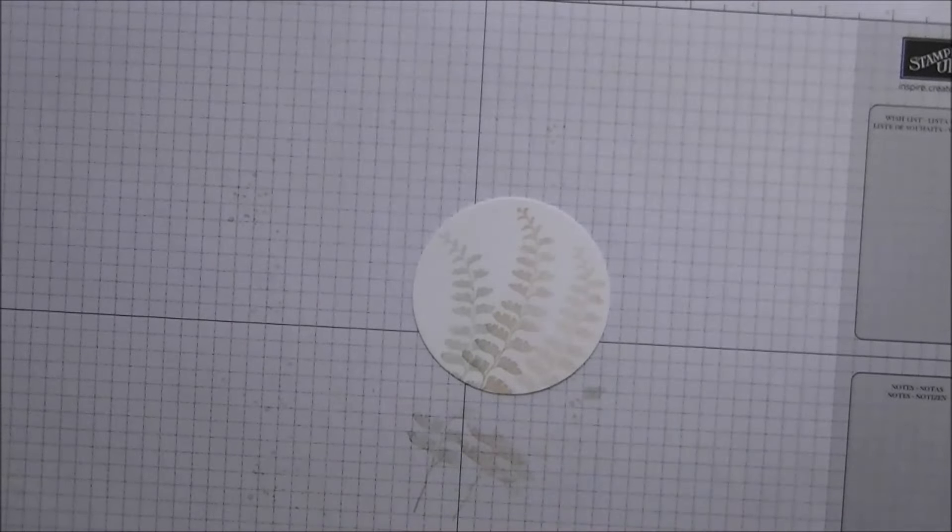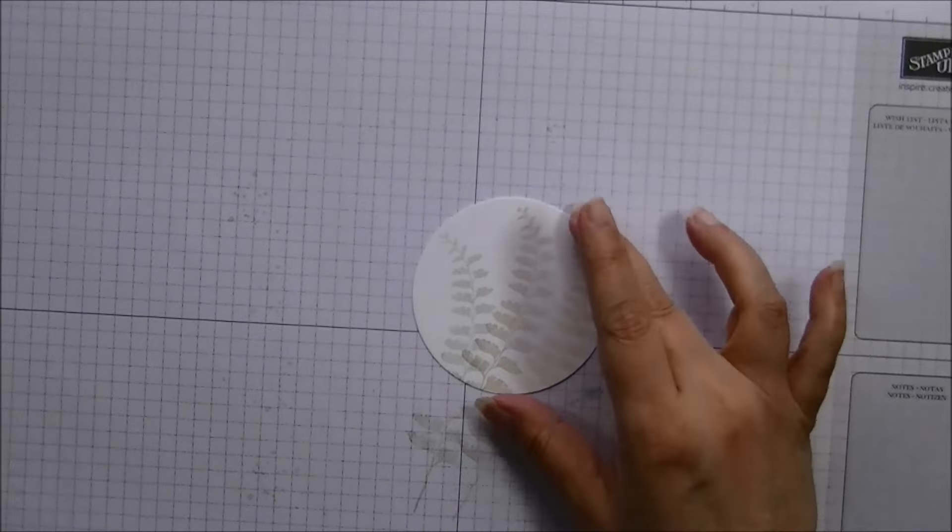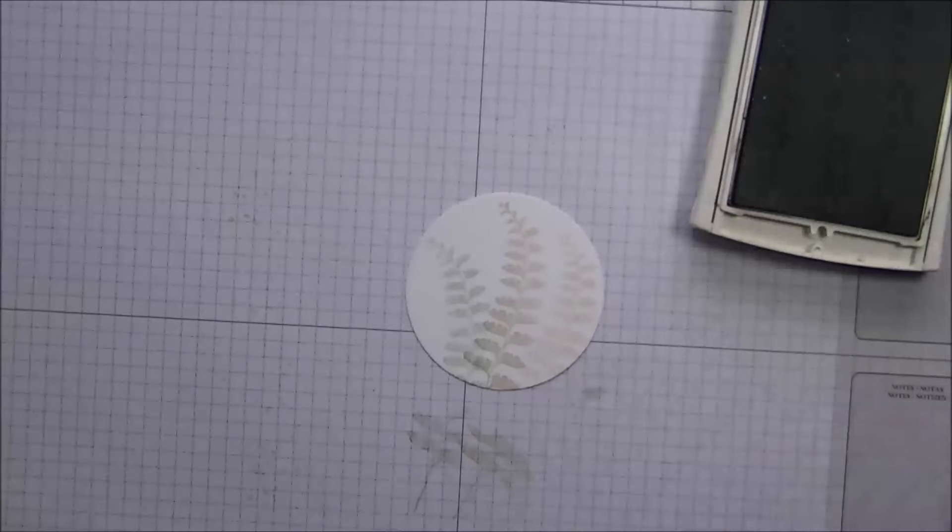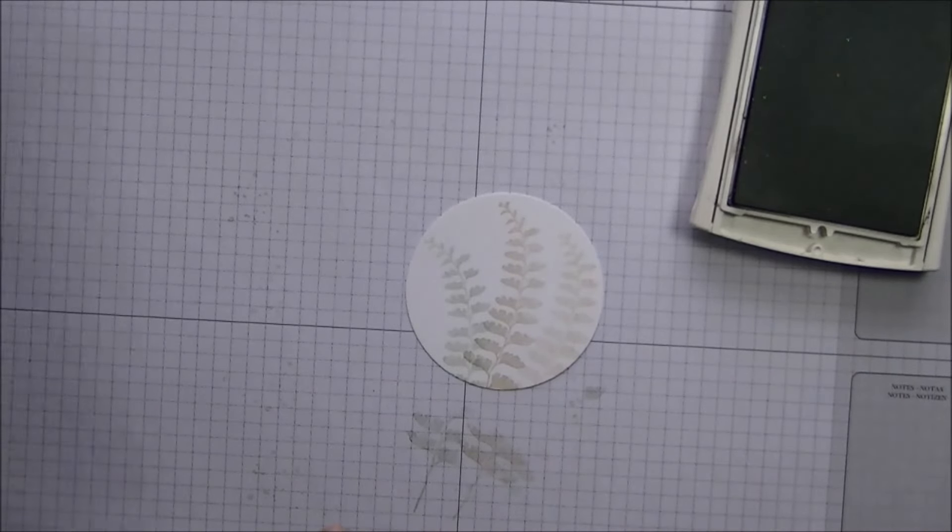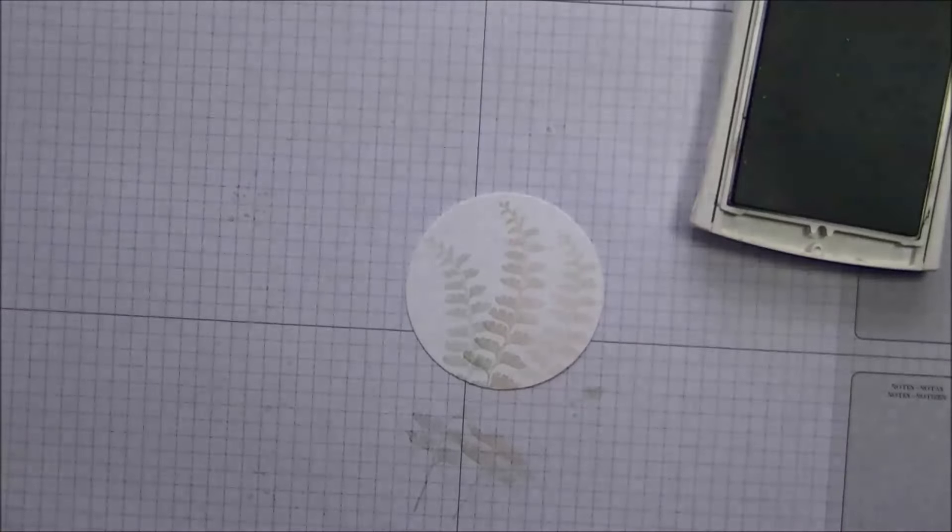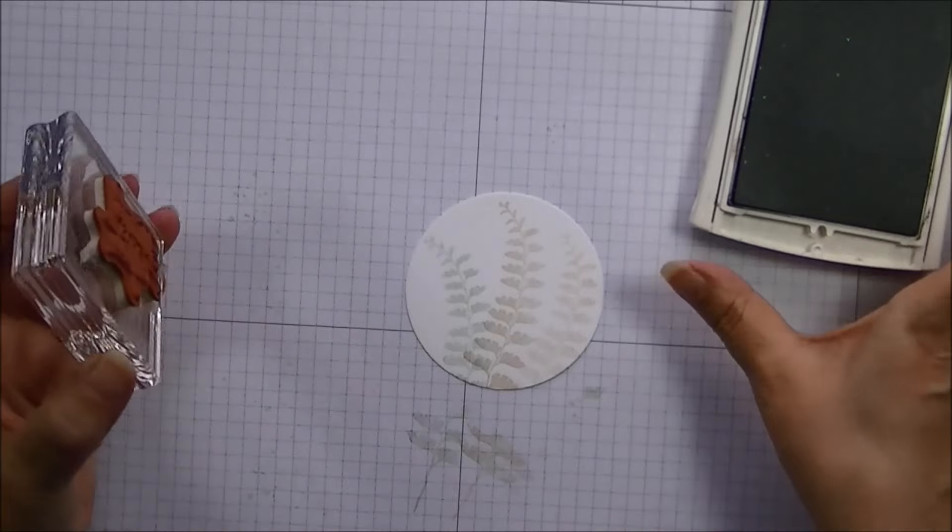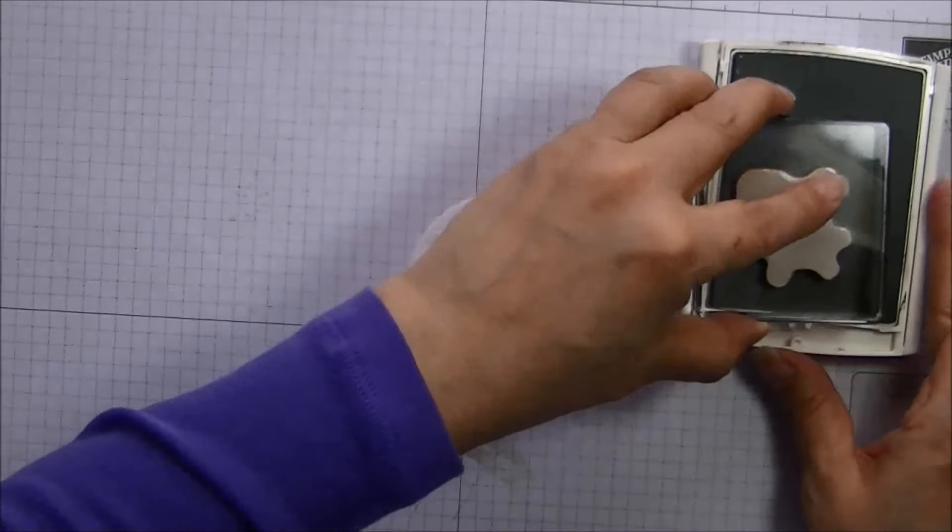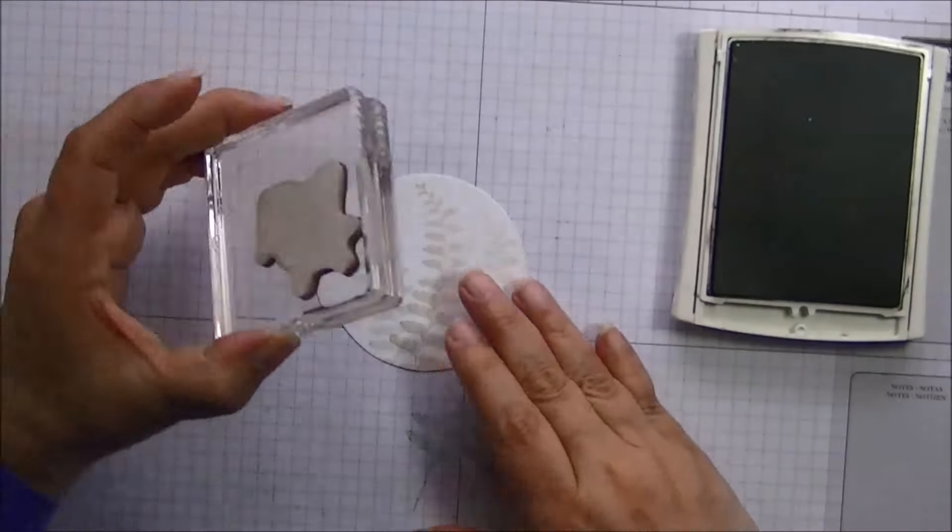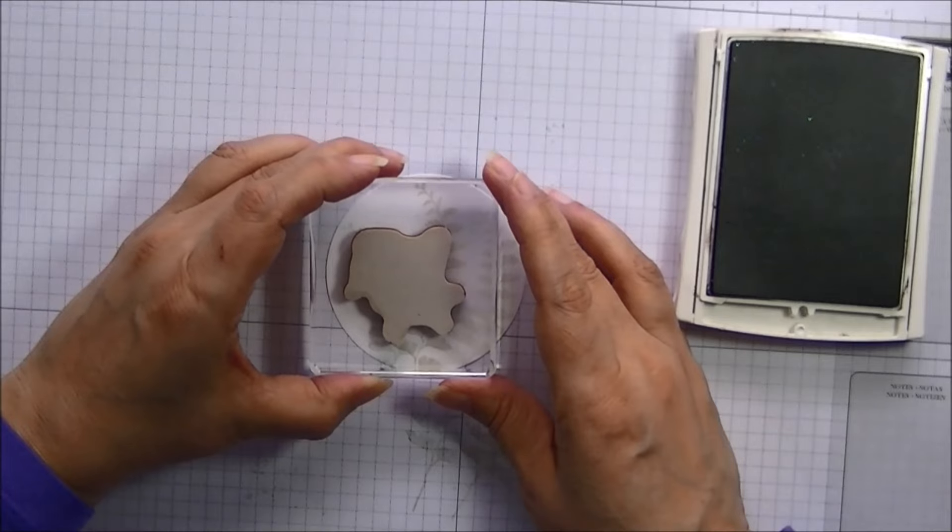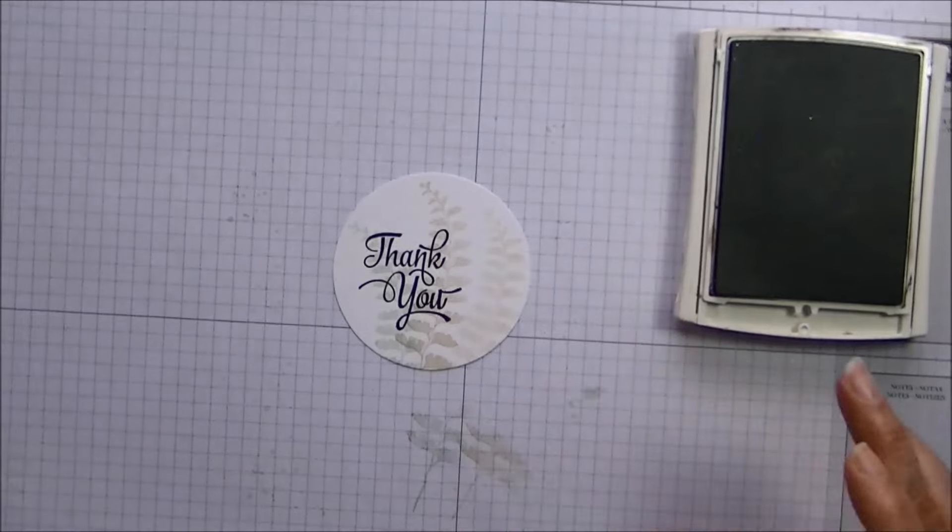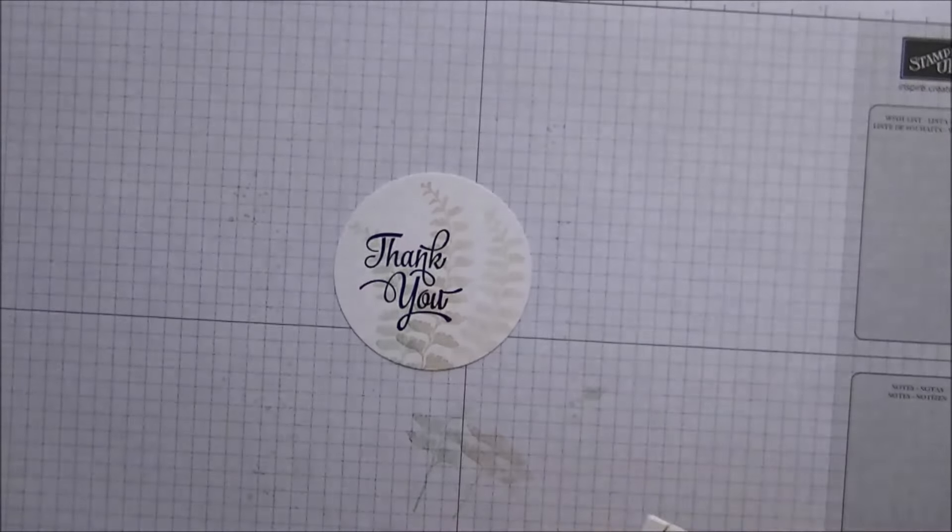So now what we're going to do is grab our early espresso. And we are going to go ahead and we are going to grab the thank you from the one big meaning. And that is mounted already on my D block. I am going to ink it up. And then I am going to come over to the left a little bit and stamp my sentiment. Like that. Gorgeous.